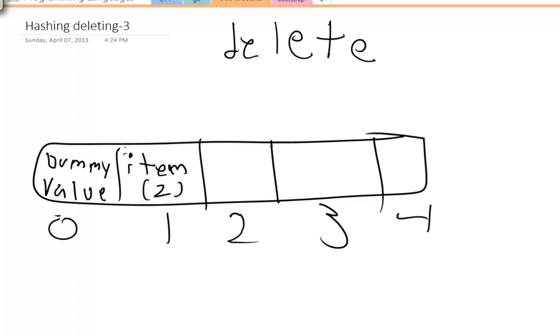And so this way, when I do my find and when I do my calculation, I see that there's a dummy value, but instead of stopping and saying it's not there, I continue my search and increment and find item 2. And that is why setting a dummy value in deletion can be very important because it can erase certain problems.